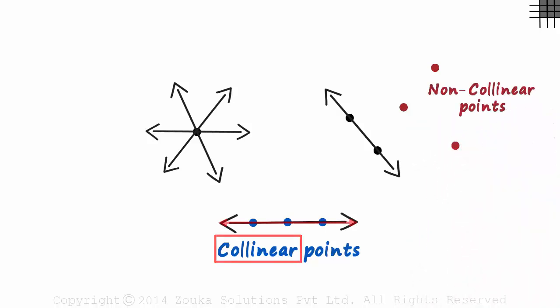Collinear if one line passes through them. Non-collinear if a line does not pass through them. So wait, three collinear points are special. They form a line. But what's special about three non-collinear points?